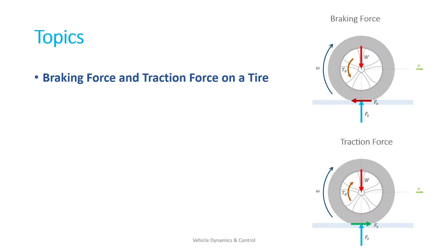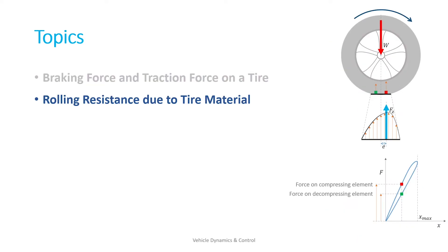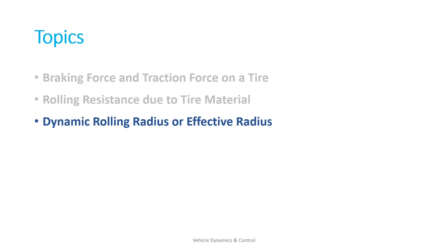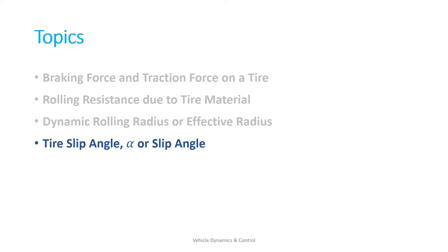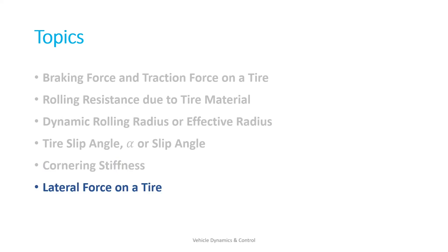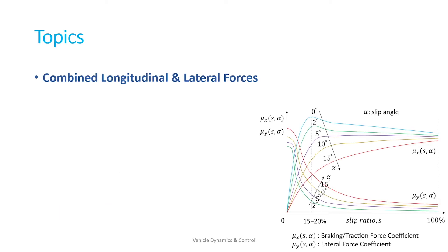Then we will have a closer look at braking force and traction force on a tire, then rolling resistance due to tire material, and then one of the most important parameters — dynamic rolling radius or effective radius. Then we will see the tire slip angle, cornering stiffness and lateral force, and we will also see friction circle or friction ellipse, and then the combined longitudinal and lateral forces.